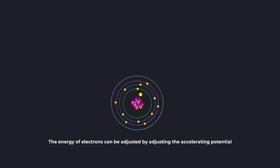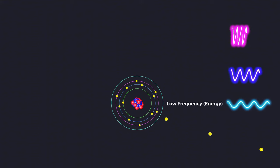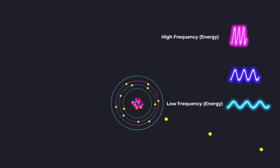The energy of the emitted X-rays depends on the energy of the bombarding electrons, and by adjusting the energy of the electrons, you can obtain X-rays of different frequencies or energies.